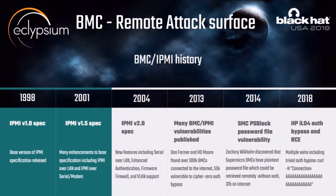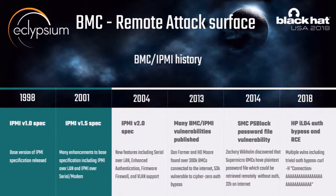A short history of IPMI: the spec came out in 1998, got its LAN additions in 2001, added VLAN and firewall support in 2004, and then we started seeing vulnerabilities in 2013 and 2014. The famous ones are H.D. Moore and Dan Farmer, who scanned the internet and found 300,000 BMCs — 53,000 of which were vulnerable to Cipher Zero authentication bypass. Most recently there was the HPI-04 authentication bypass vulnerability.